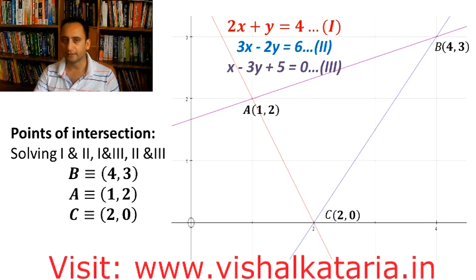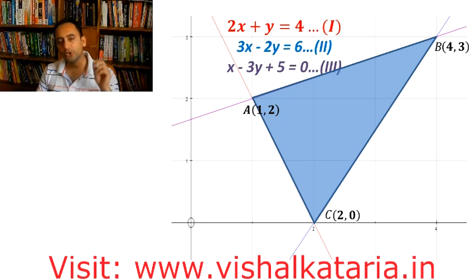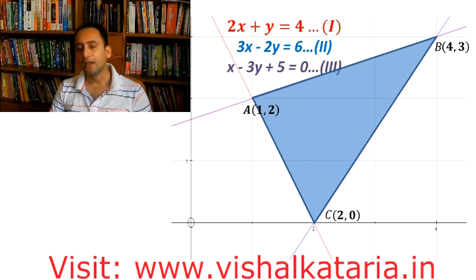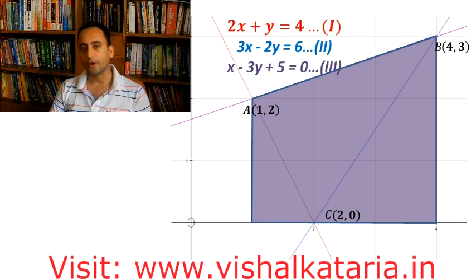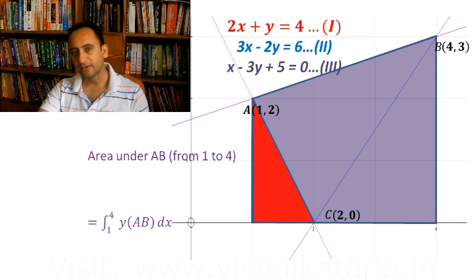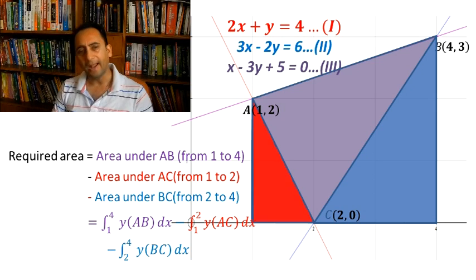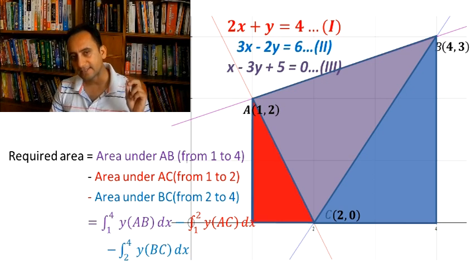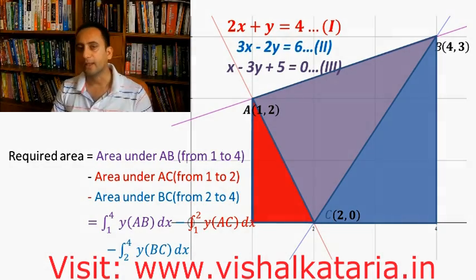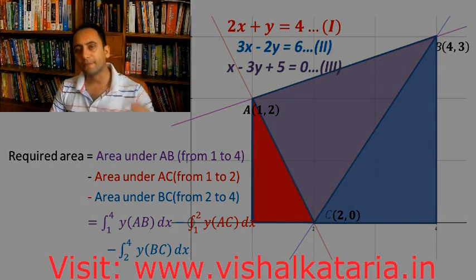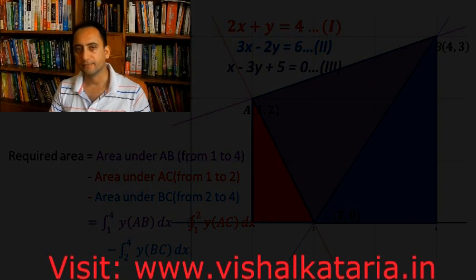Let's plot these three points on the graph and join all vertices to form the triangle. We need to find the blue shaded region, which is: area under AC from x = 1 to 4, minus area under AC from x = 1 to 2, minus area under BC from x = 2 to 4. So the required area = integral from 1 to 4 of y_AB dx − integral from 1 to 2 of y_AC dx − integral from 2 to 4 of y_BC dx. Values of y are obtained from the given linear equations.